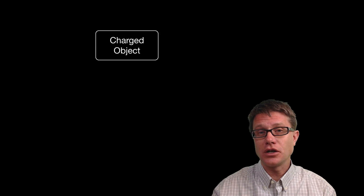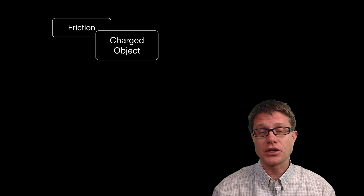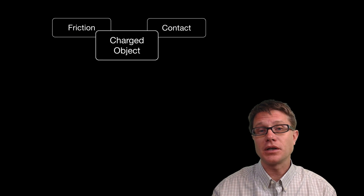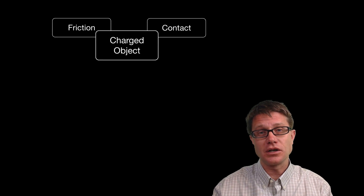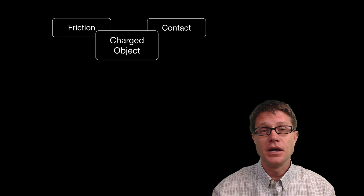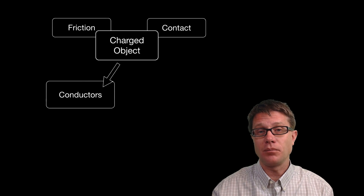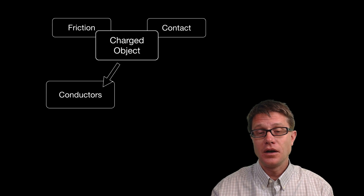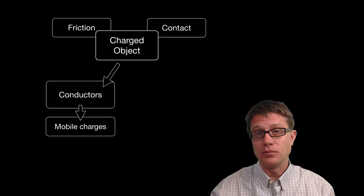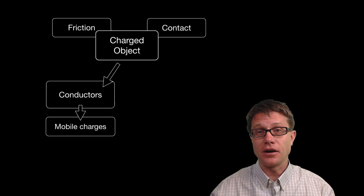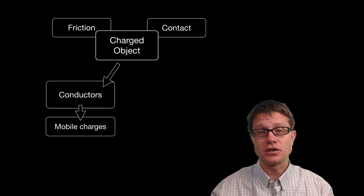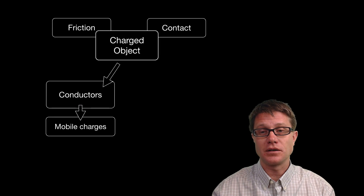A charged object can be charged through friction, like rubbing your hair on a balloon, or through conduction by touching another charged object. Depending on what that charged object is — maybe it is a conductor like metal — the electrons in there are mobile. They can move around and that charge is going to start to dissipate, or at least move within the object itself.